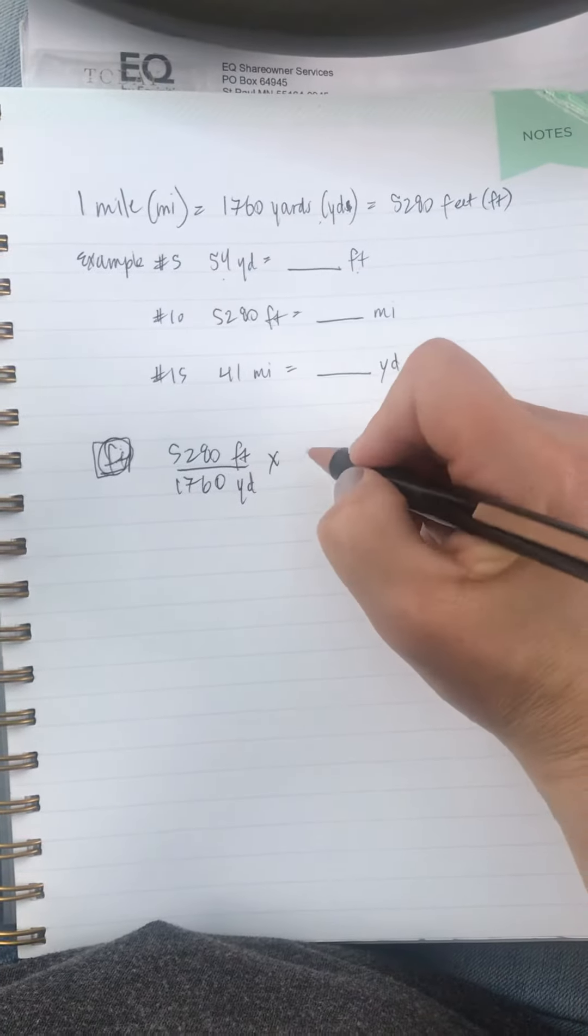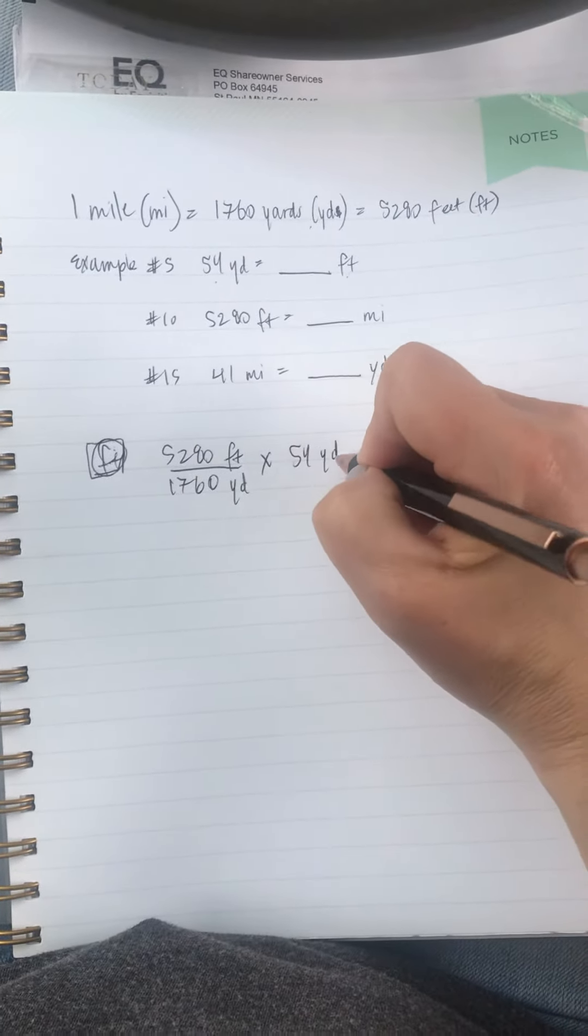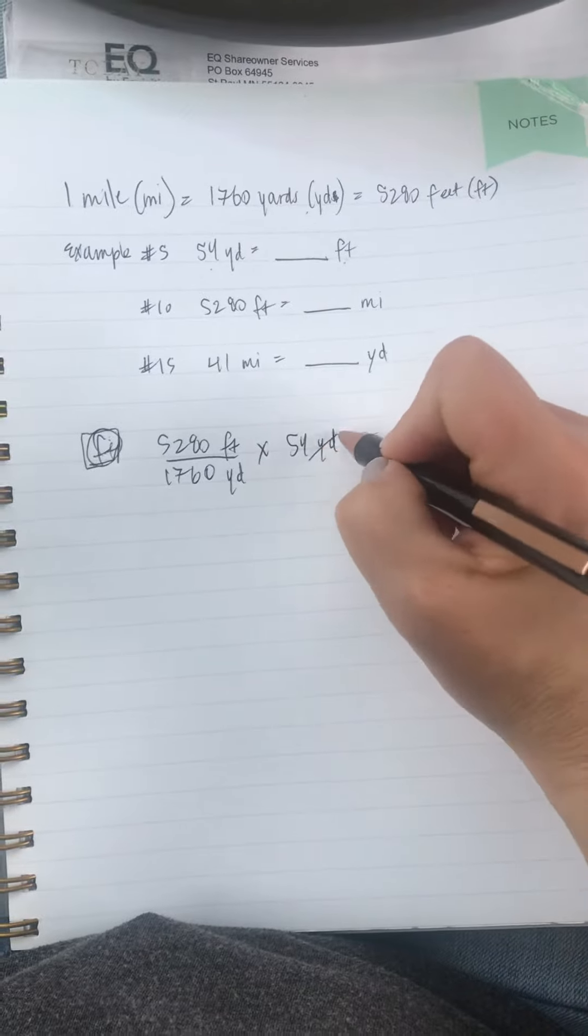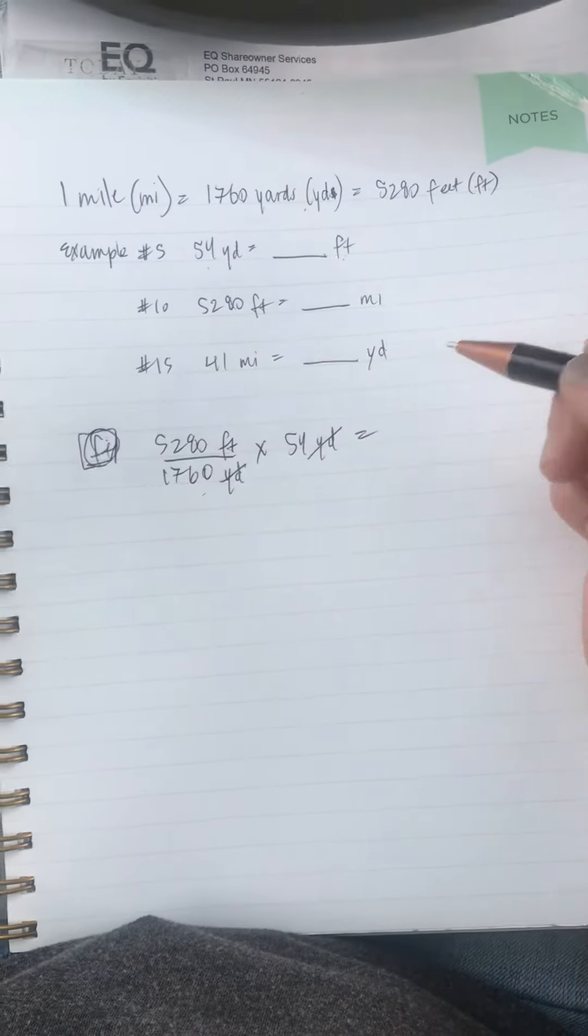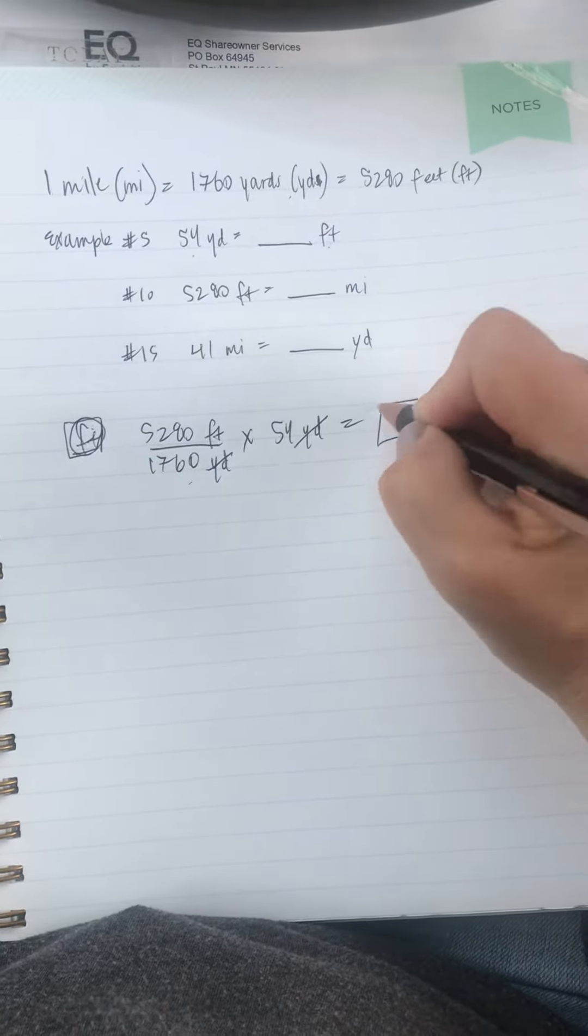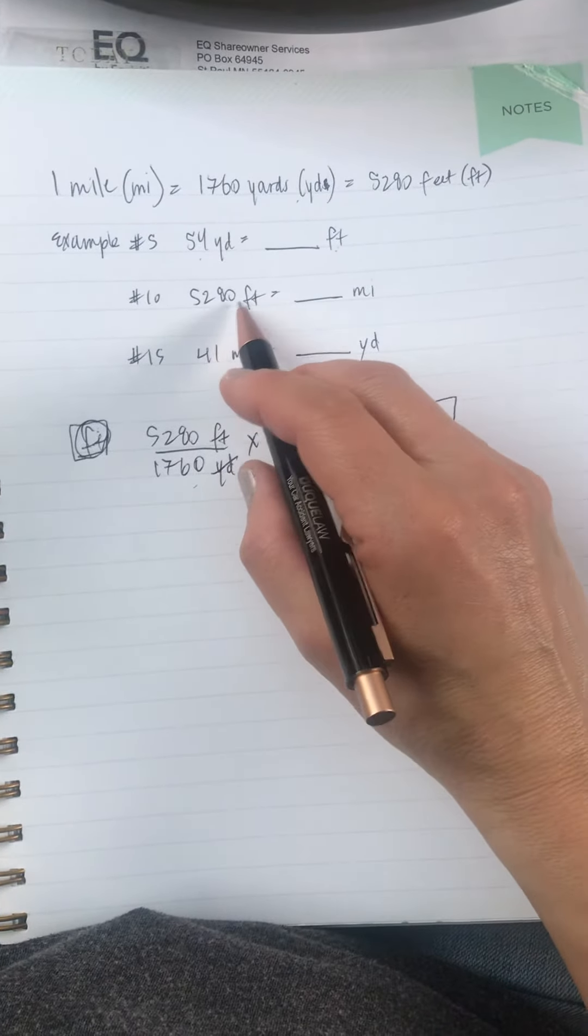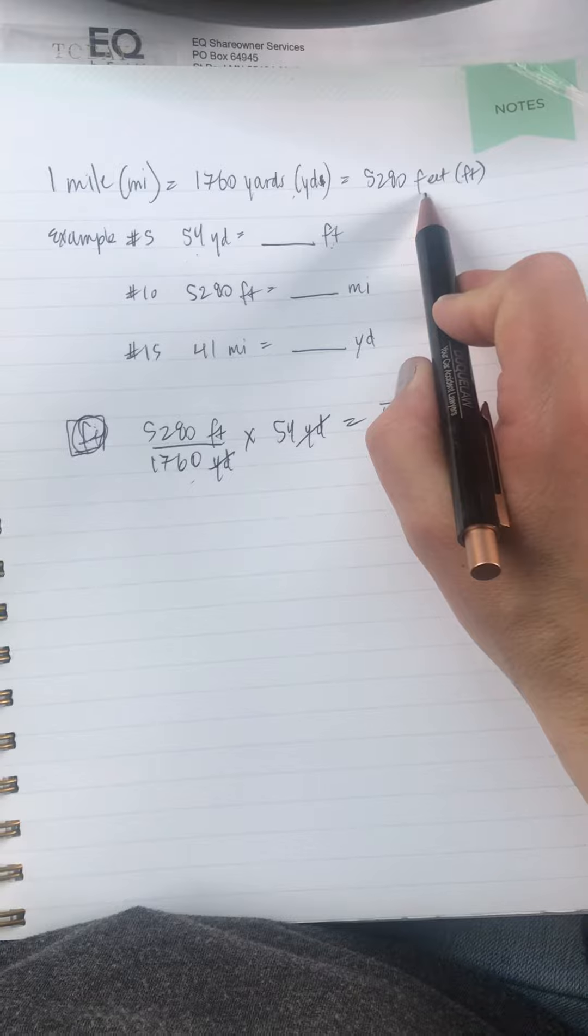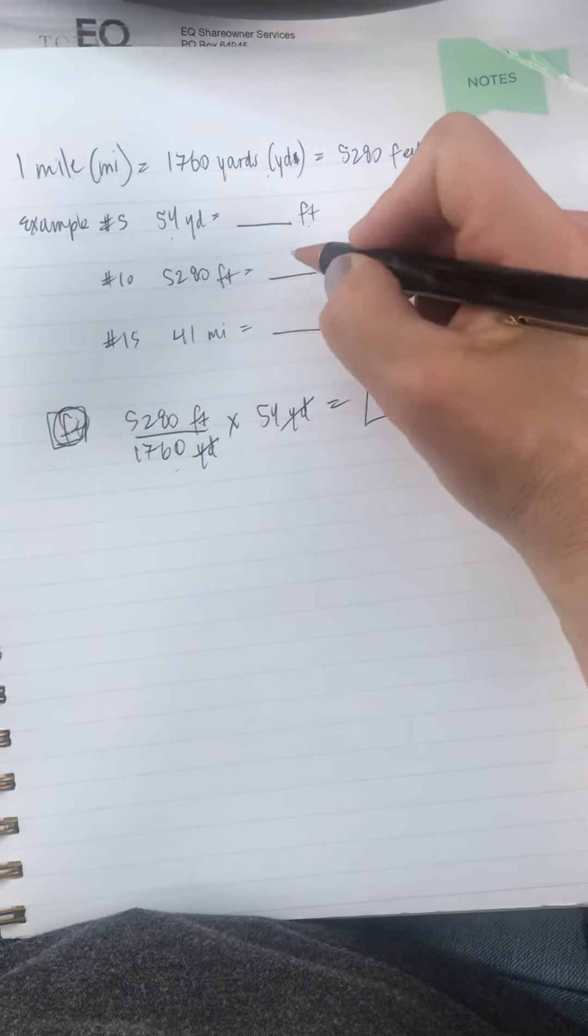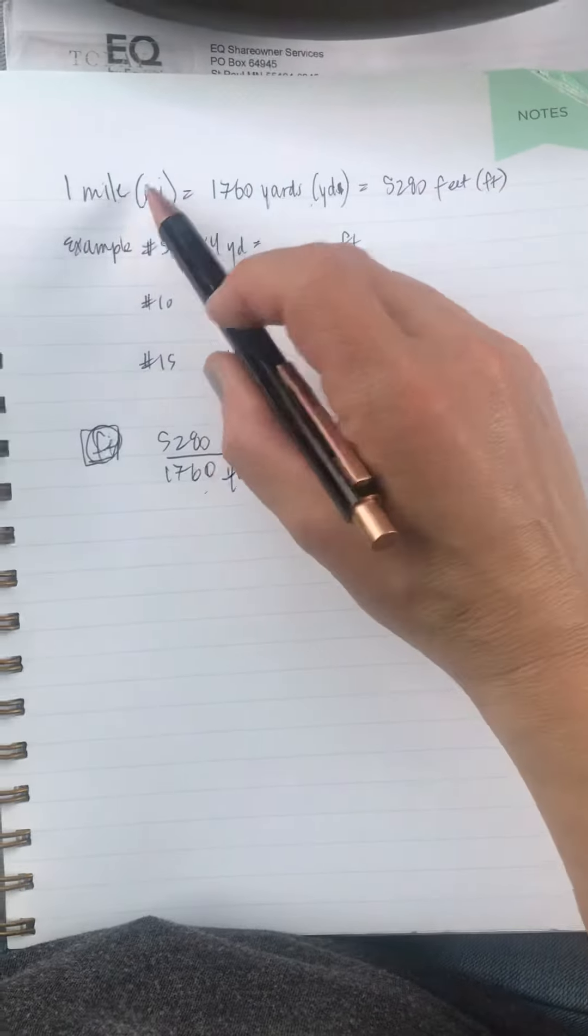And then what am I given? 54 yards. And I literally do this the same way for each time. I know that I can cross these off and do the math, and then I get my answer, which I don't have a calculator now. But it's the same thing with, well, this one's easy. I don't know if he knew this or not, but that's your answer. You know, you can get your answer up there.